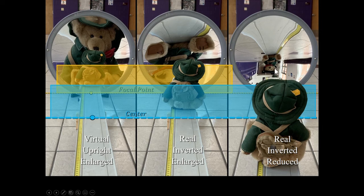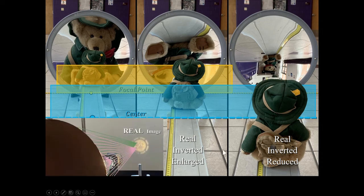The ray diagrams tell you all of that. These real images — I could place a piece of paper somewhere and get that light concentrated back onto it. You can't do that with virtual images.